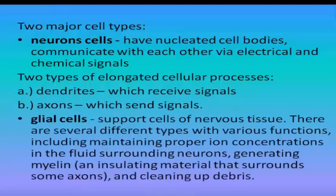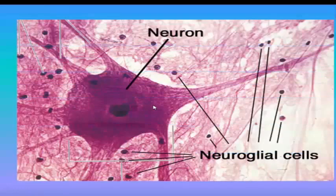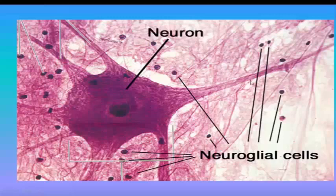The second major cell type of nervous tissue is glial cells, which are the support cells of nervous tissue. There are several different types with various functions, including maintaining proper ion concentrations in the fluid surrounding neurons, generating myelin — an insulating material that surrounds some axons — and cleaning up dead cells. As you can see in the picture, we have the neurons and the neuroglial cells, which are the glial cells.